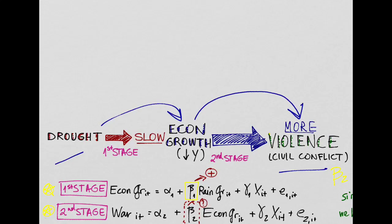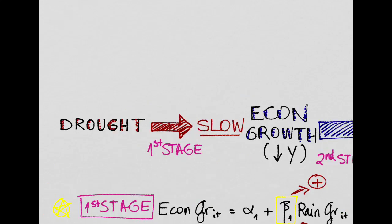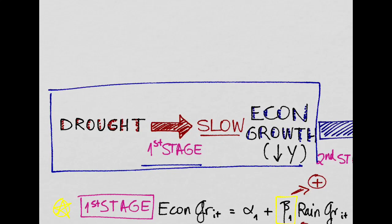Thus, more civil conflict in Africa. This first relationship, we're going to call it the first stage relationship, and we're going to study it in more detail later. It's basically how drought affects economic growth in Africa's agricultural society.